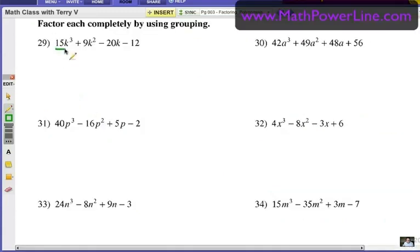Number 29, just look at the first two terms. Notice how the exponents go down by degree, k to the third, k squared, k to the first and a constant. Just look at two at a time, 15k to the third and 9k squared. Take out the largest factor. That would be 3k squared. What's left? 5k and 3. 5k plus 3.